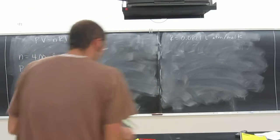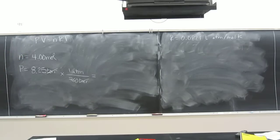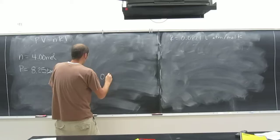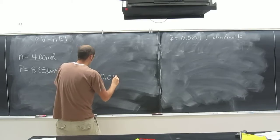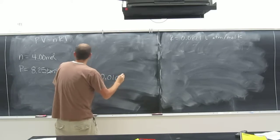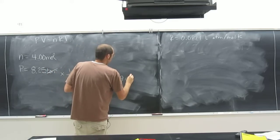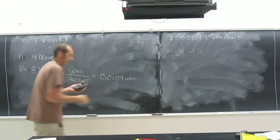Okay, so remember we want those in atm. 8.25 divided by 760. So 0.0109 for now. I'll just keep that in my calculator.